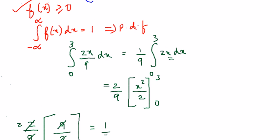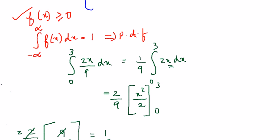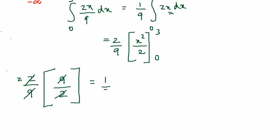We have proved that the between limit 0 to 3 f of x dx is equal to 1. Therefore, you can say that f of x is a probability distribution function right, that's it.